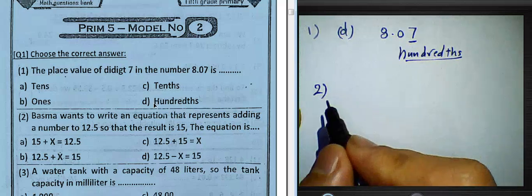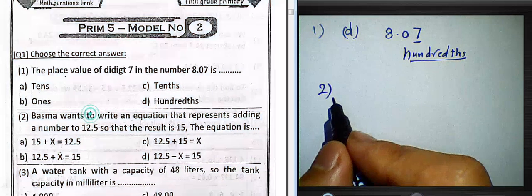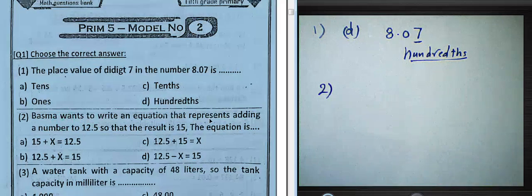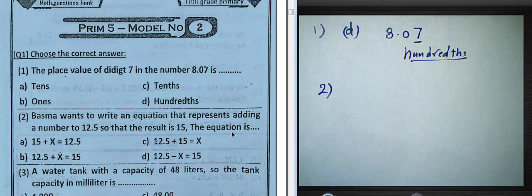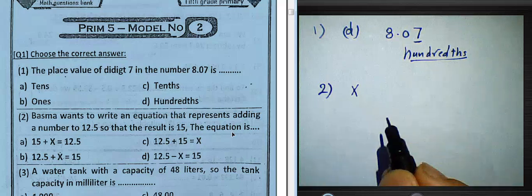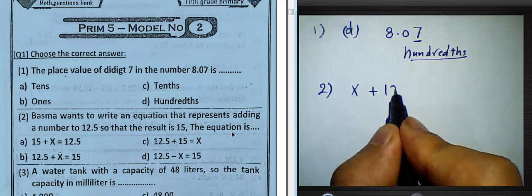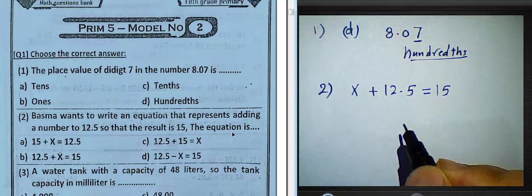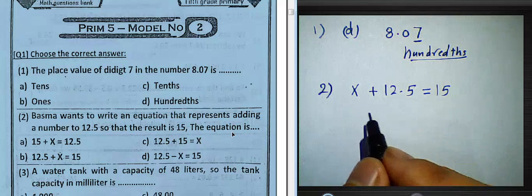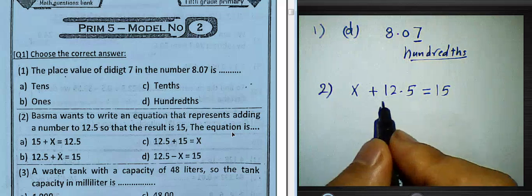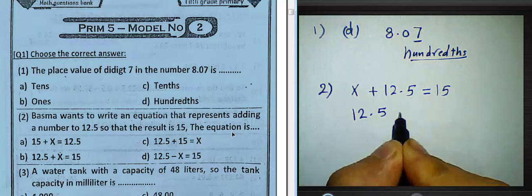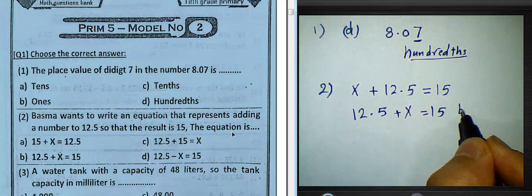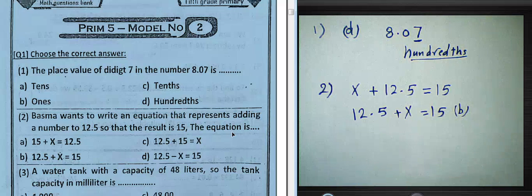Question number two: Basma wanted to write an equation that represents adding a number to 12.5 so that the result is 15. We will write the unknown number as x. So x plus 12.5 equals 15. Using the commutative property, 12.5 plus x equals 15. We must choose the third option.